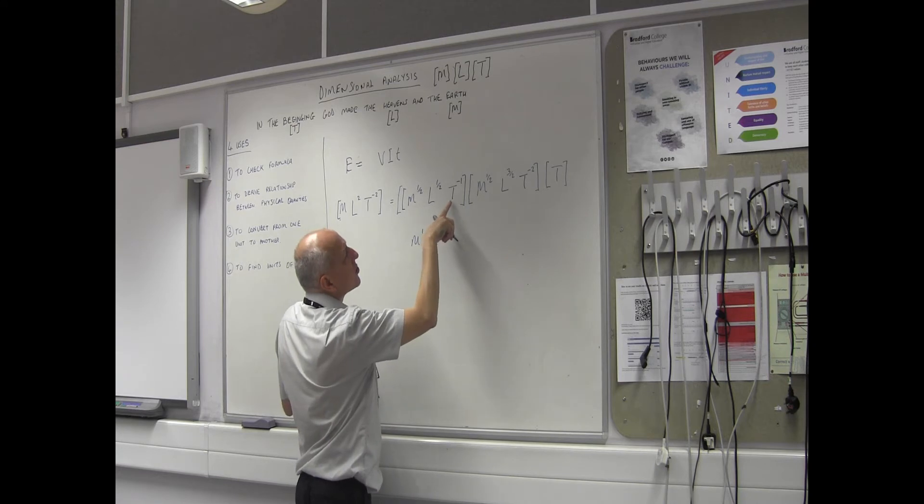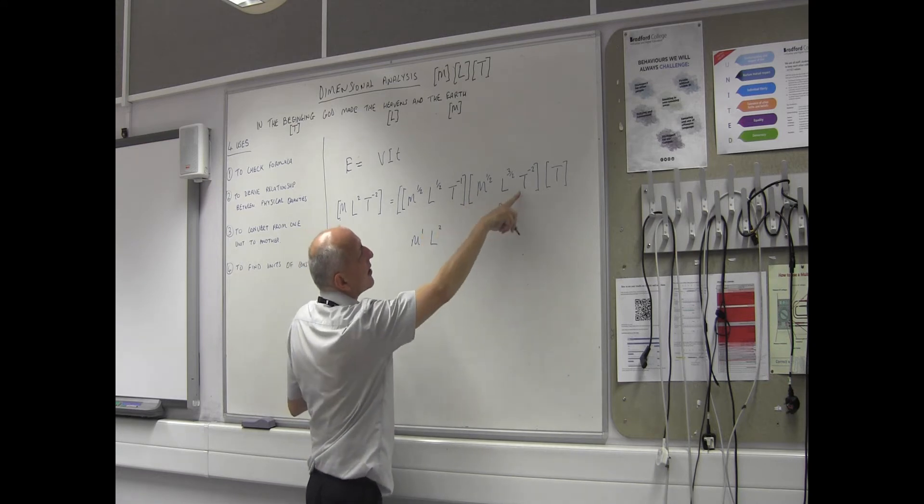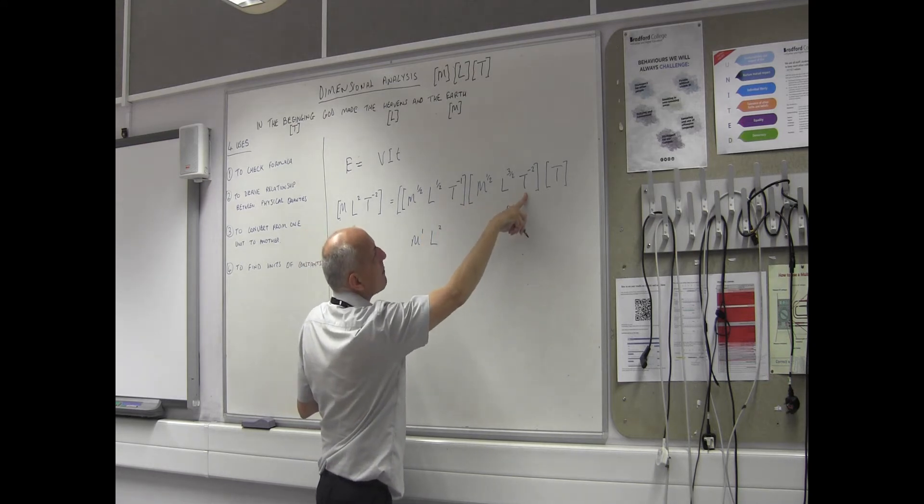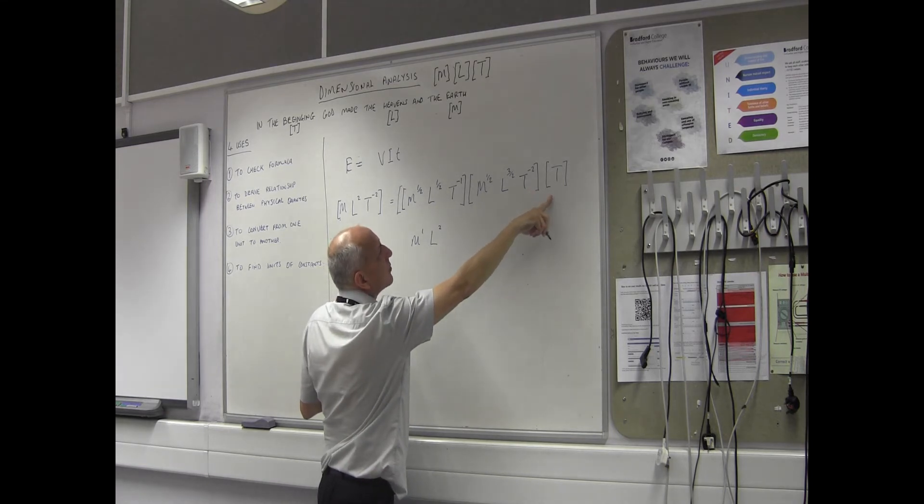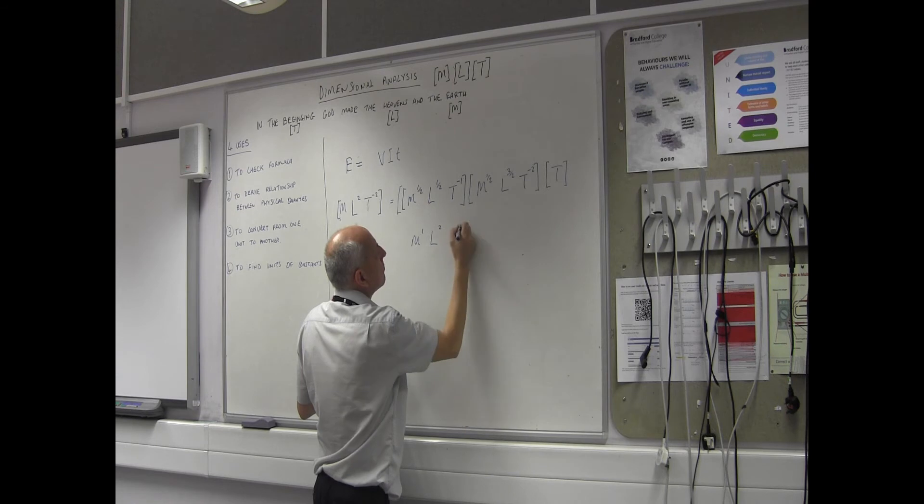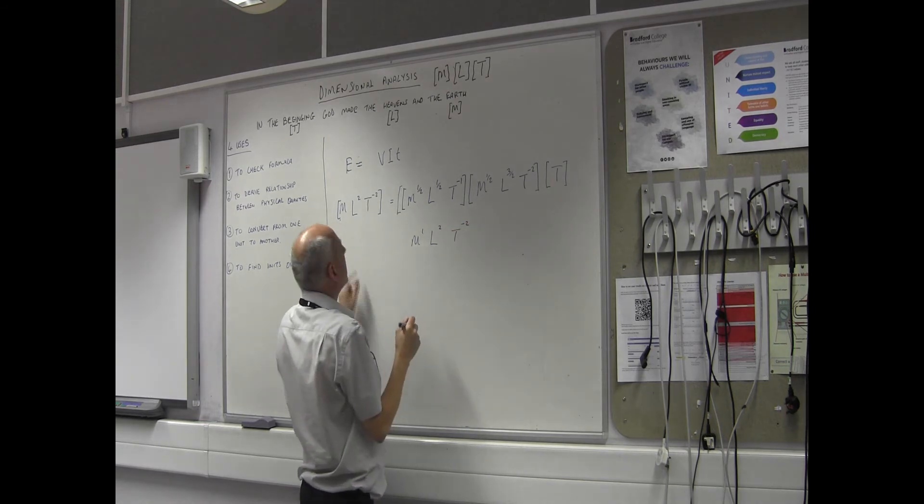And then I've got T added together with minus. That's going to give me minus three plus one whole one. So back to T minus two. That's nice to see.